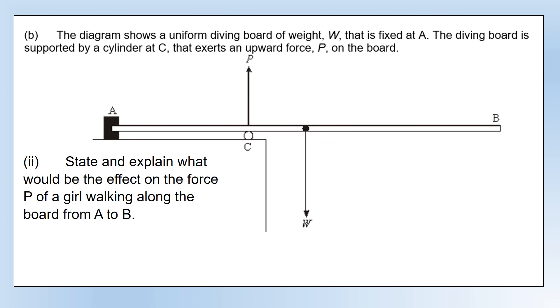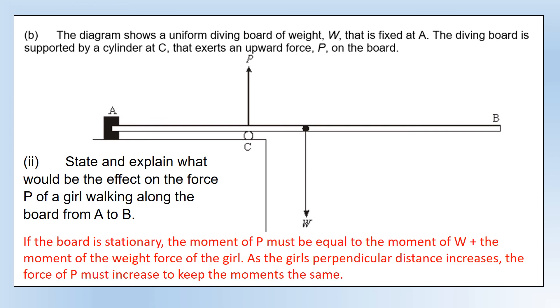State and explain what would be the effect on the force P of a girl walking on the board from A to B. Again, the board is stationary, so the moment of P must be equal to the moment of W plus the moment of the weight force of the girl, because W and the girl are acting to rotate it in the same direction. As the girl walks along the board, the perpendicular distance increases, so the force P must increase to keep moments the same.